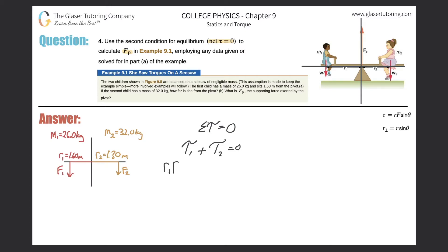So then I can say R sub one, F sub one, sine theta sub one, plus R sub two, F sub two, sine of theta sub two, will all equal zero.